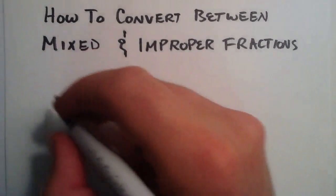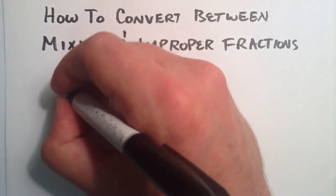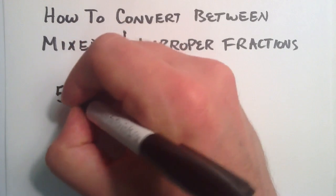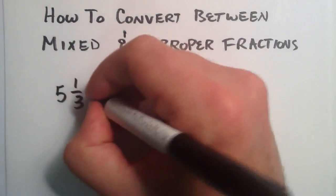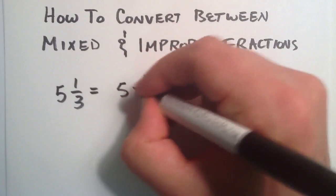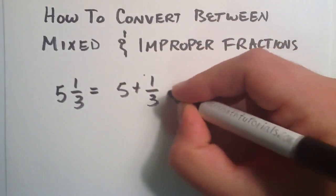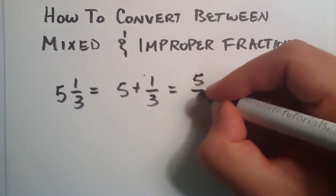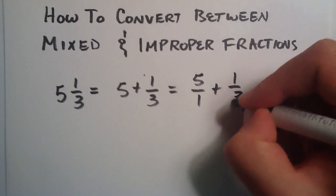So let's start with a mixed fraction. We're going to start with the mixed fraction 5 and 1 third. Now 5 and 1 third can be written as 5 plus 1 over 3, or simply 5 divided by 1 plus 1 third.